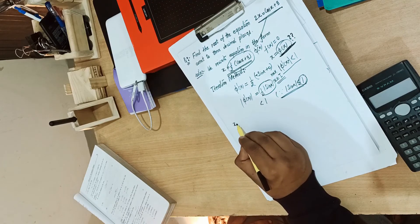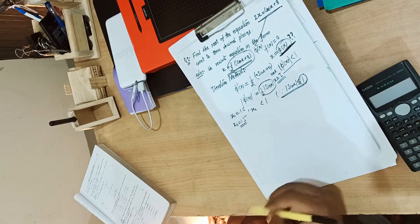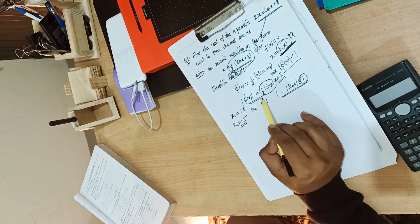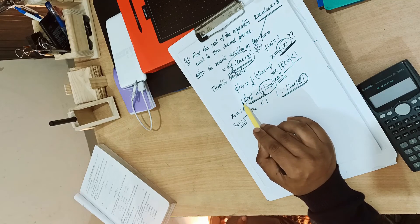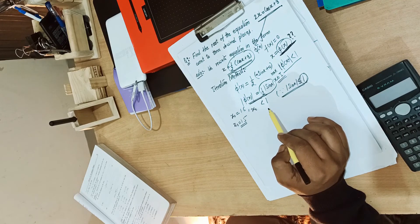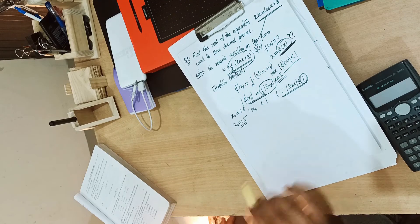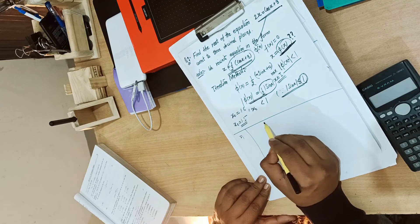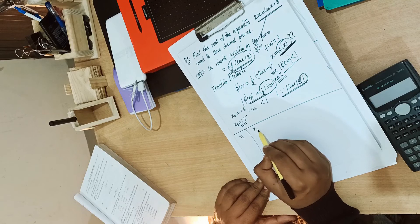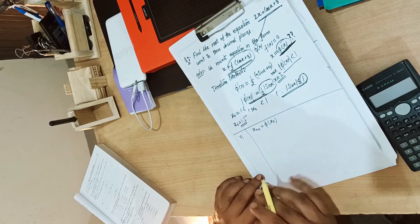Because the convergence condition holds for all x on the real line, we can choose any initial approximation. For example, we can choose x₀ = 1.5, or 1.6 — any real number. We now form a table for the iterations, with columns for the iteration number and xₙ₊₁ = phi(xₙ). We process this formula repeatedly.